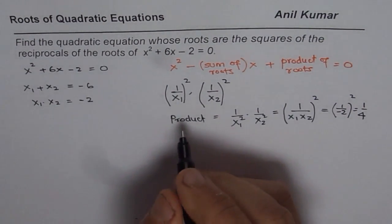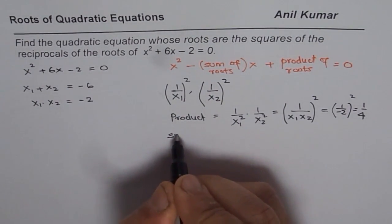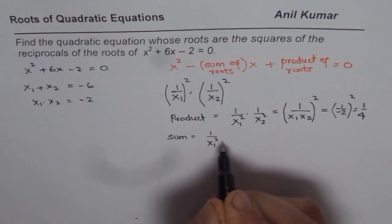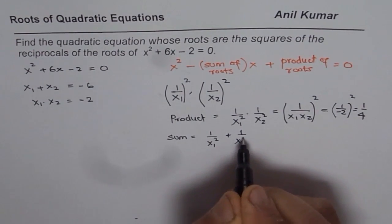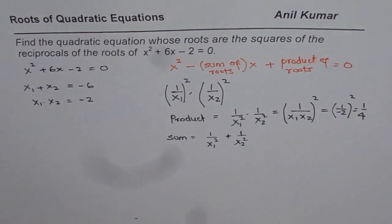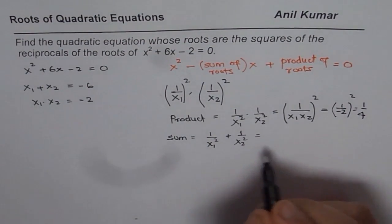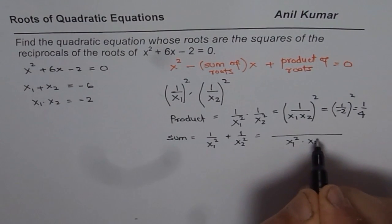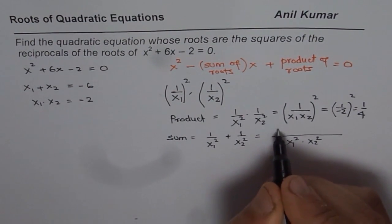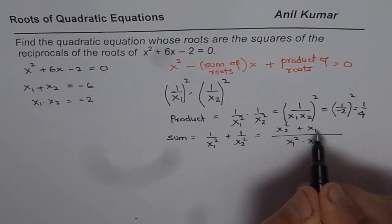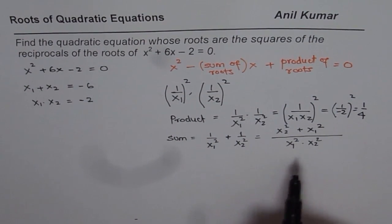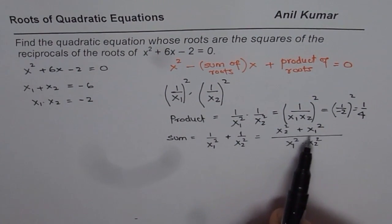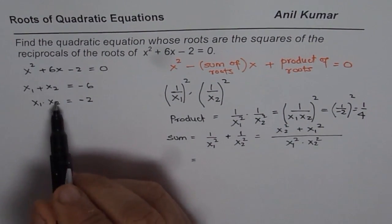Now for the sum of the new roots: we add 1 over x1 squared with 1 over x2 squared. Taking common denominator x1 squared times x2 squared, we get x2 squared plus x1 squared over (x1·x2) whole squared. The denominator is (x1·x2) whole squared, which equals (minus 2) squared. Now we need to express the numerator in terms of sum and product.